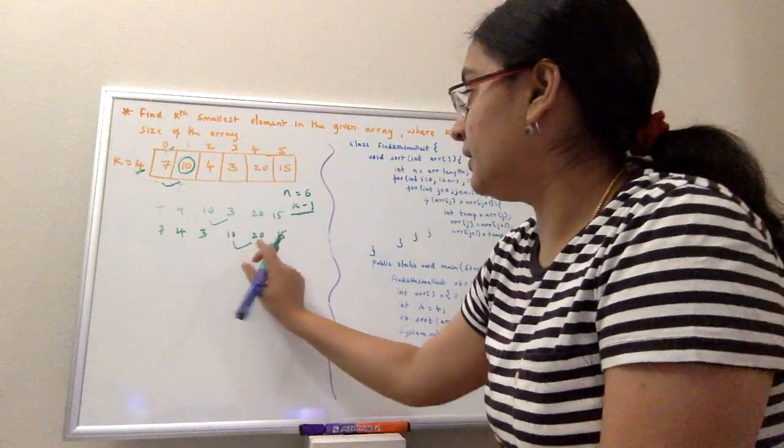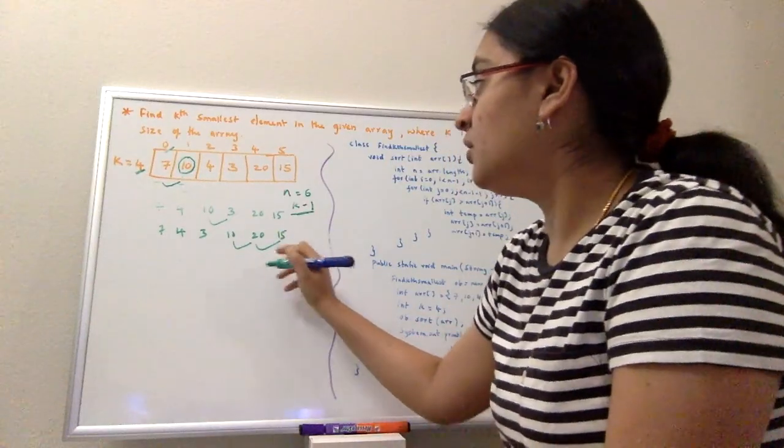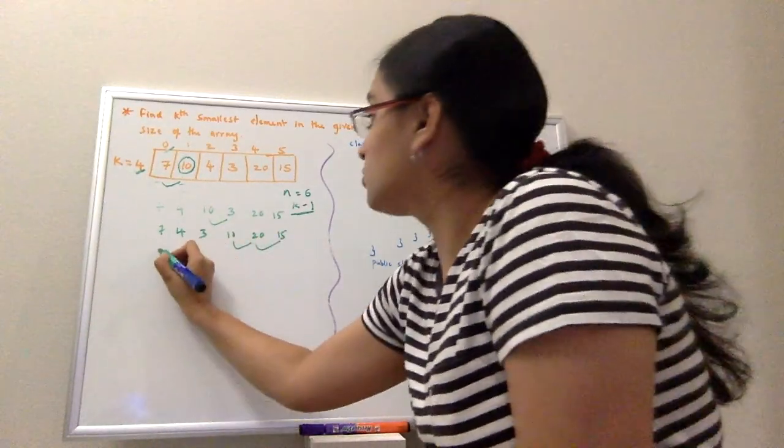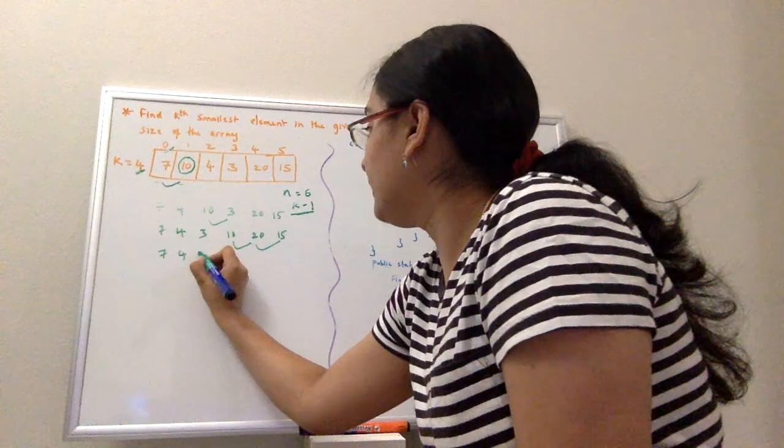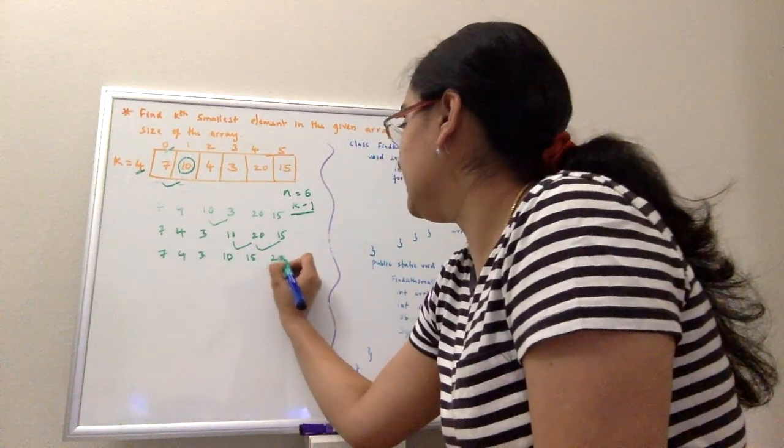But I'll do the comparison between 20 and 15 where 20 is greater. So my new array will be 7, 4, 3, 10, 15, and 20.